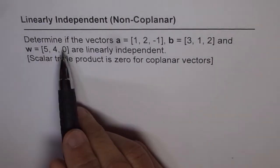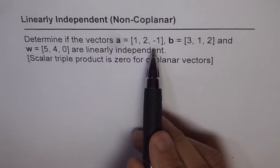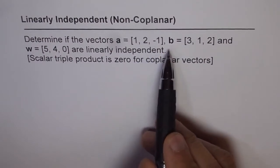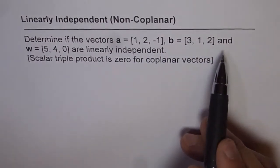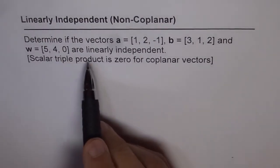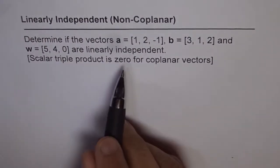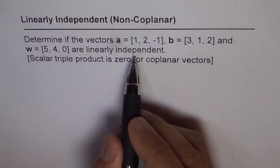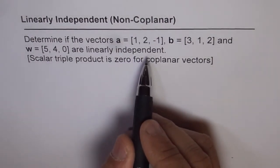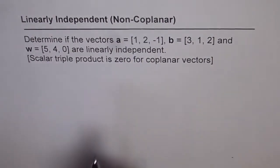The question is: determine if the vectors A = (1, 2, -1), B = (3, 1, 2), and W = (5, 4, 0) are linearly independent. As I have told you, linearly independent means that they are not in the same plane, and also means that you cannot have a linear combination of these three vectors.